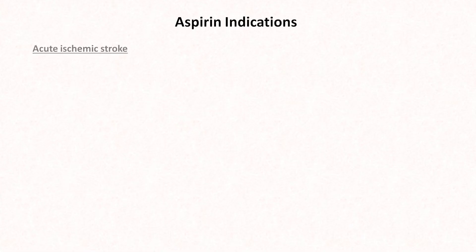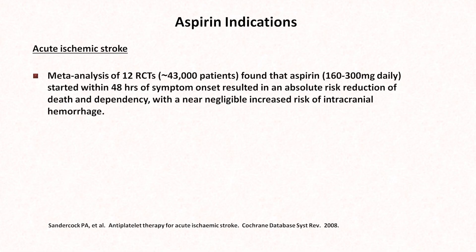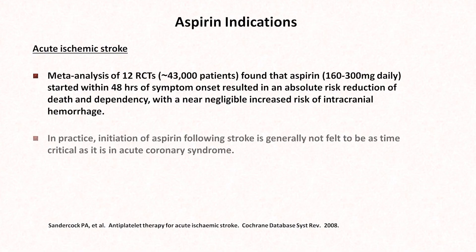The next indication is acute ischemic stroke. A meta-analysis of 12 randomized trials found that aspirin at dosages of 160 to 300 mg daily, started within 48 hours of symptom onset, resulted in an absolute risk reduction of death and dependency, with a near-negligible increased risk of intracranial hemorrhage. In practice, initiation of aspirin following stroke is generally not felt to be as time critical as it is in acute coronary syndrome.